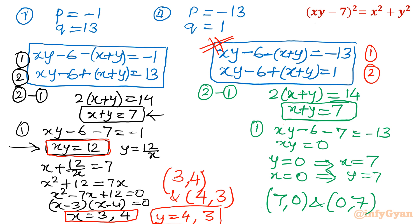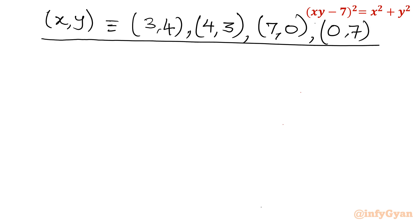So let me write now the 4 answer standard pairs. x comma y equal to 3, 4; 4, 3; 7, 0; and 0, 7. These are our solutions.